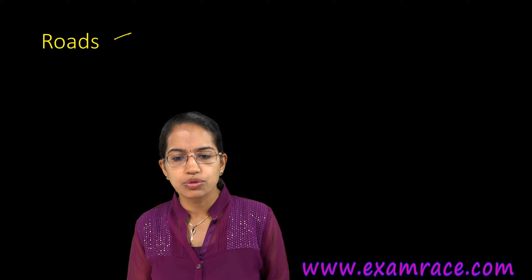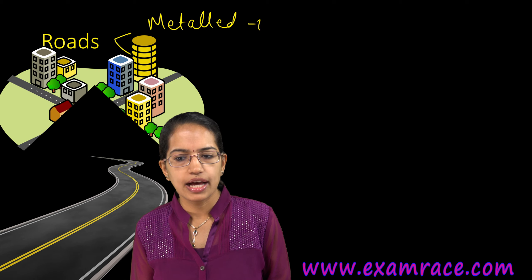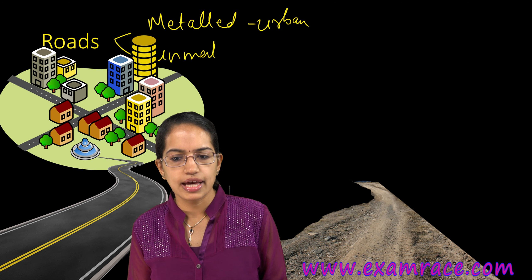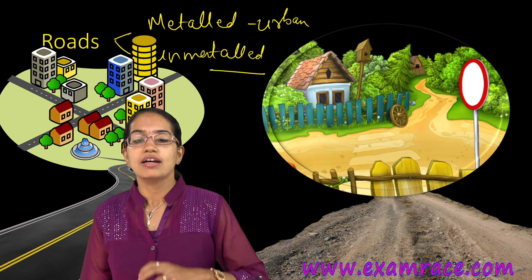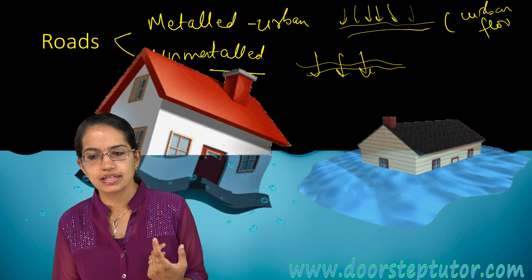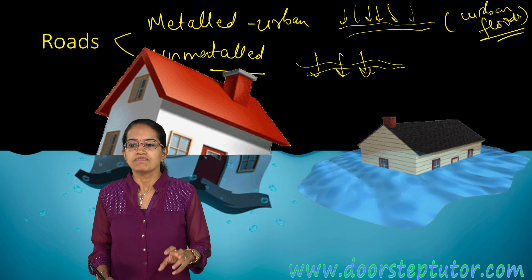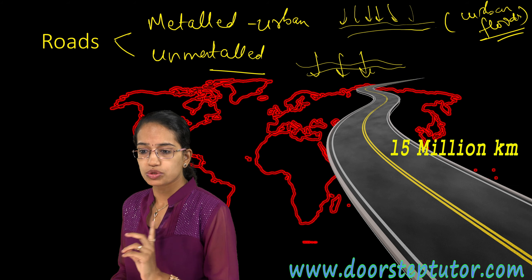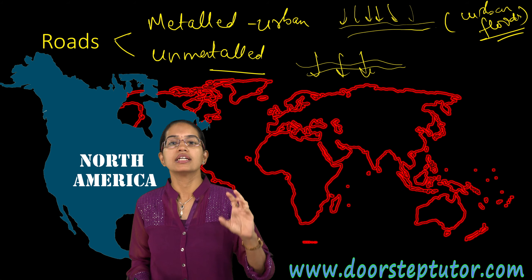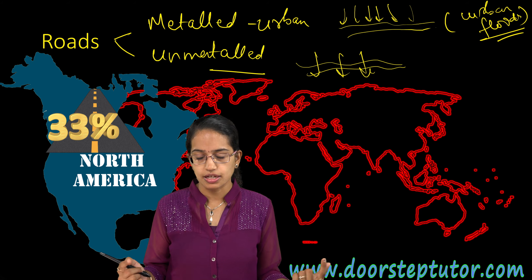Roads can be classified as metalled and unmetalled. Urban areas generally have metalled roads, while rural areas have unmetalled roads. In developed countries, better quality roads are seen. With metalled roads, rainfall cannot seep through, leading to urban floods in metropolitan areas, while unmetalled rural roads allow water to seep in. Globally, there are nearly 15 million kilometers of motorable roads, of which North America accounts for nearly 33%.